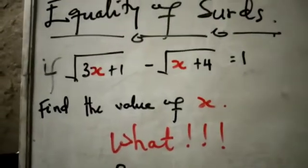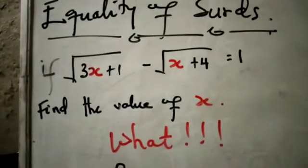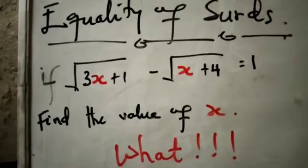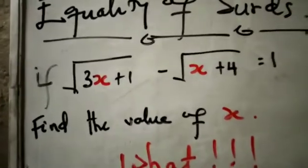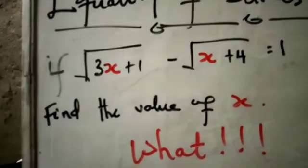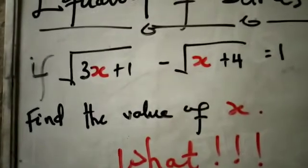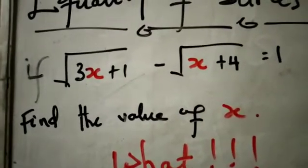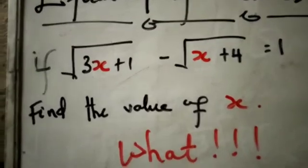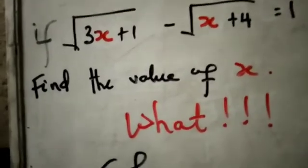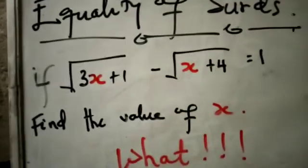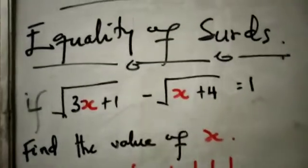This is a past exam question on equality of sets in mathematics. We are asked: if √(3x+1) - √(x+4) = 1, find the value of x. Let's dive into the solution and check how you can deal with this type of problem.